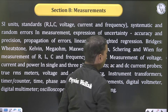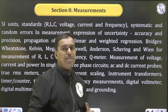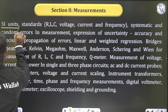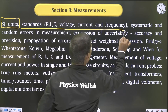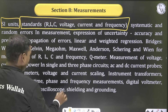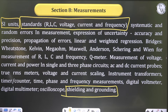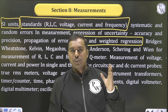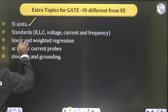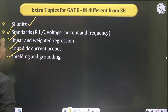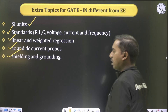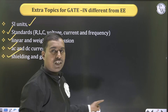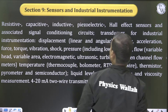The next subject with extra topics is measurements. The measurement subject is common for Gate electrical and Gate instrumentation, but instrumentation students have extra topics: SI units and standards, RLC voltage, current and frequency, shielding and grounding, and linear and weighted regression. Electrical students who want to write the instrumentation stream must focus on these additional topics in measurements.